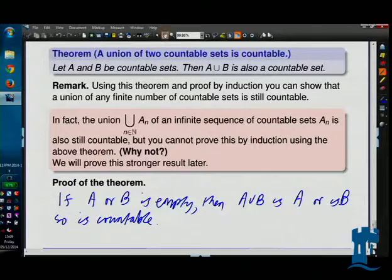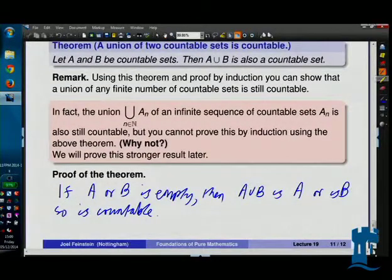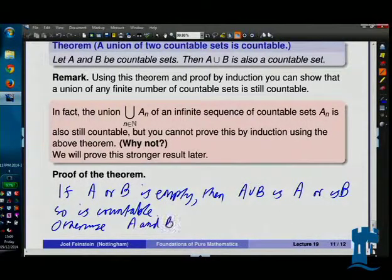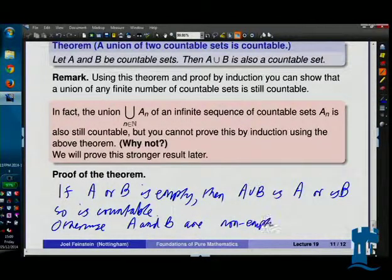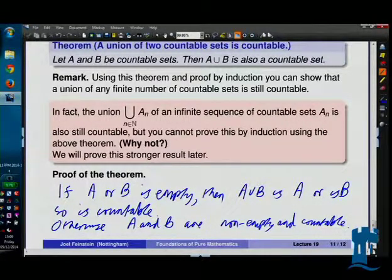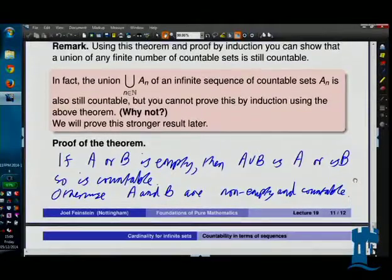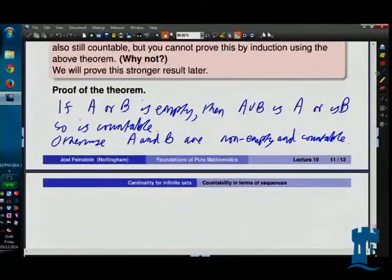Okay, otherwise, A and B are not empty and countable. So they might be finite and non-empty, or they might be infinite, but countably infinite. Either way, they've each got a sequence using them up, but we'll need a different notation for each because they're different sets.